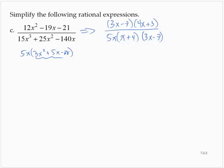Removing the common factor of 3x minus 7, that leaves us with 4x minus 3—I'm sorry, 4x plus 3—over 5x by x plus 4.